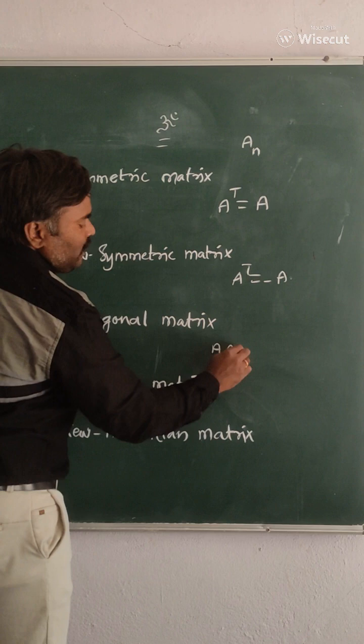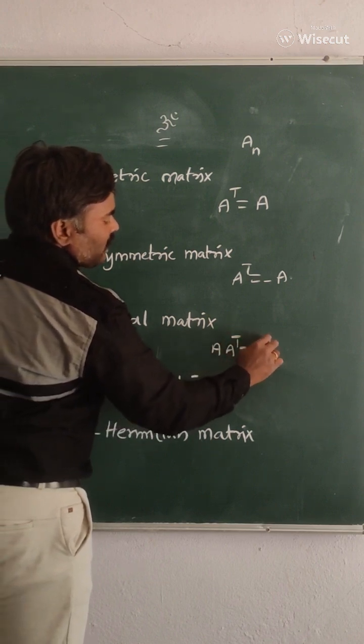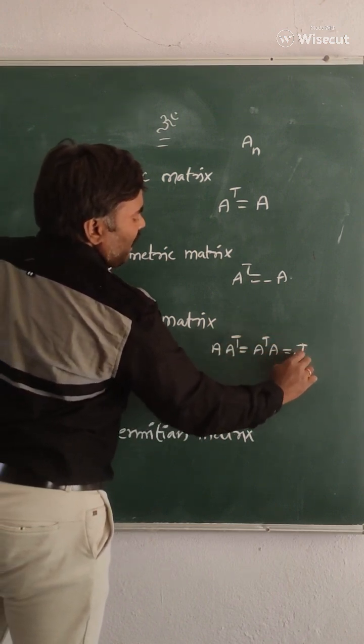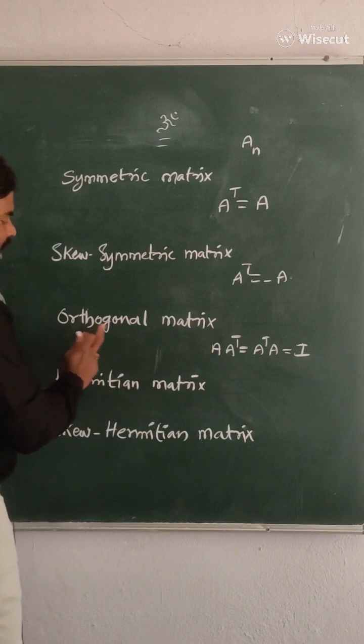Orthogonal matrix: A into A transpose is equal to A transpose into A is equal to identity matrix. Then you can say the matrix A is orthogonal.